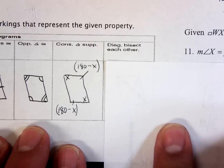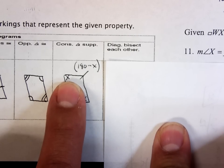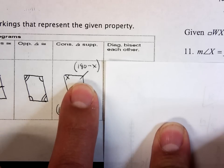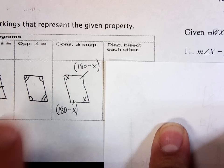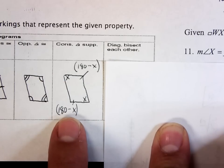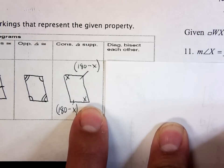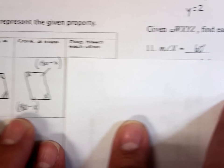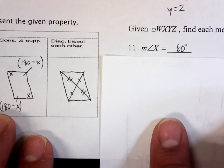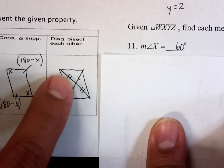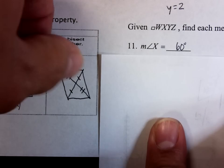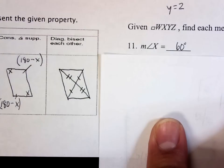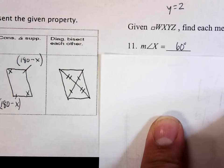Consecutive angles being supplementary. Well, if this angle is x, this angle must be 180 minus x. Because they must be supplementary, they must add up to 180 degrees. If this angle is x, this must be 180 minus x also, and this must be x. And if I'm drawing diagonals bisecting each other, it'll look like this. This piece must equal to this piece, and this piece must equal to this piece. That's what it means if my diagonals bisect each other.